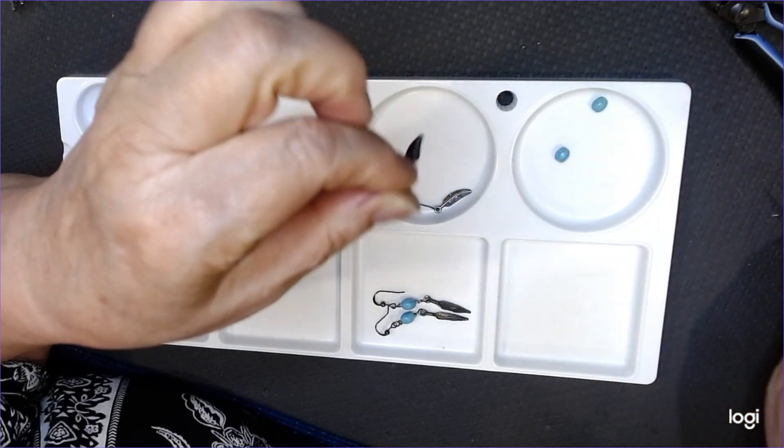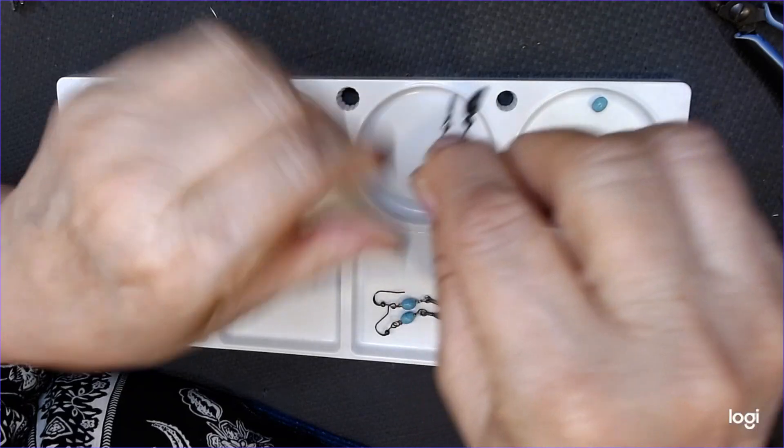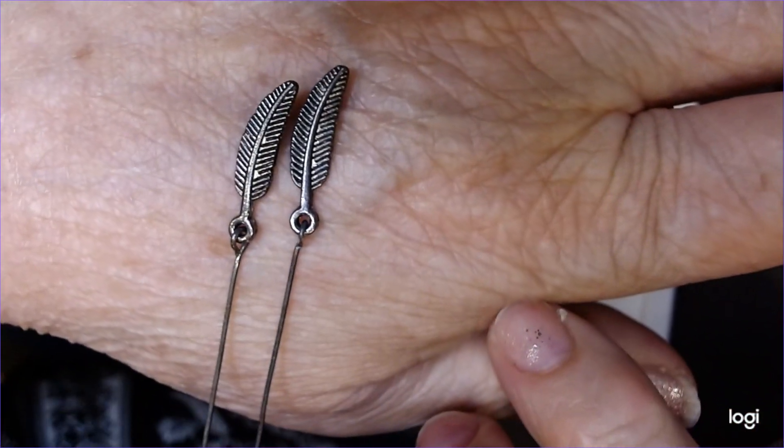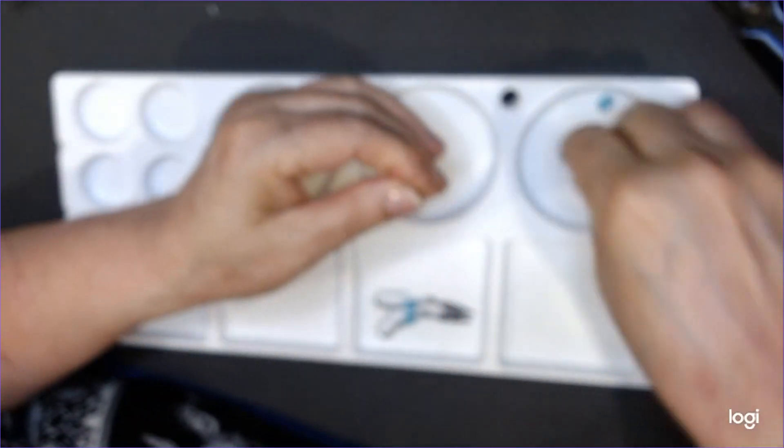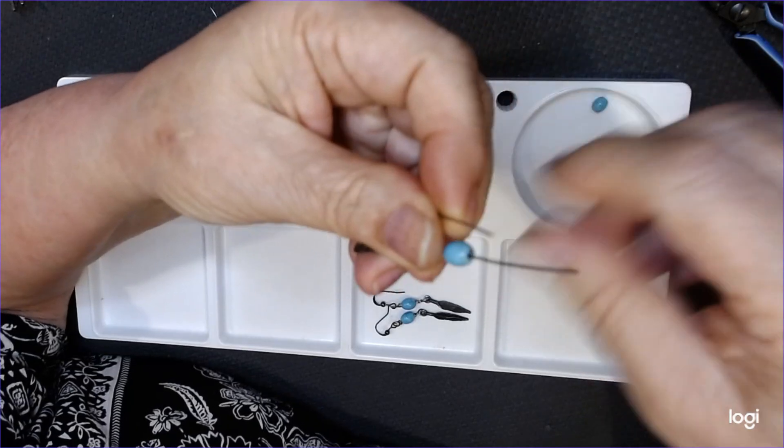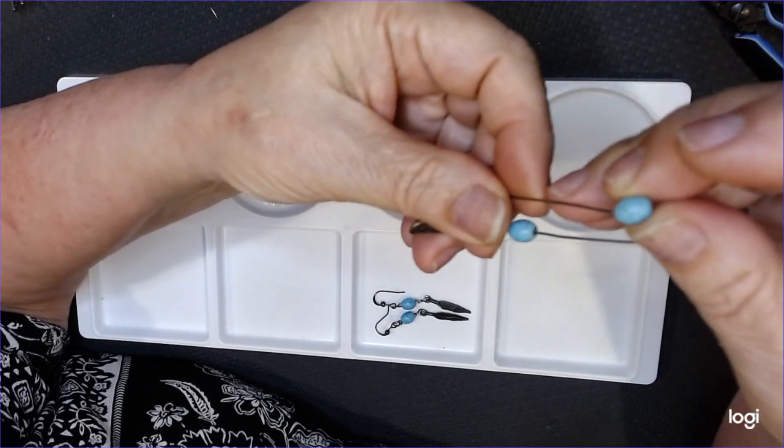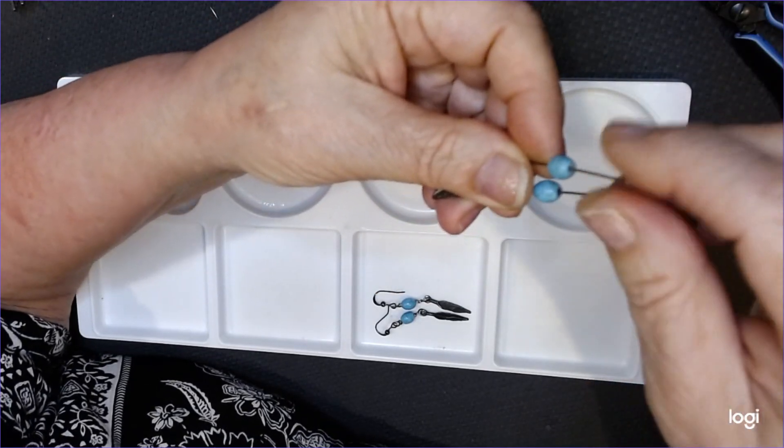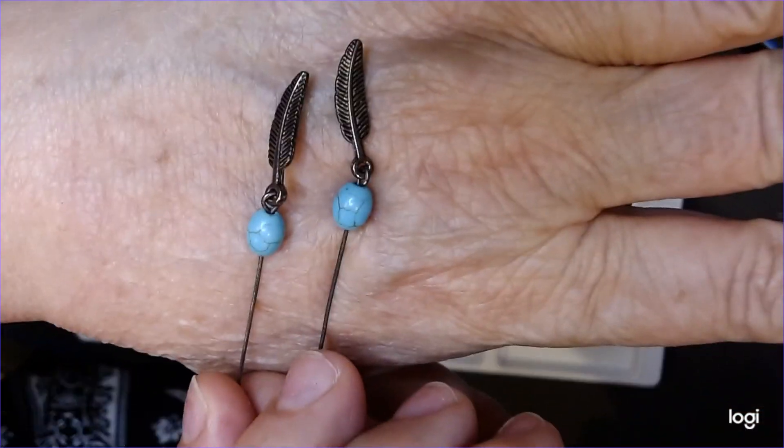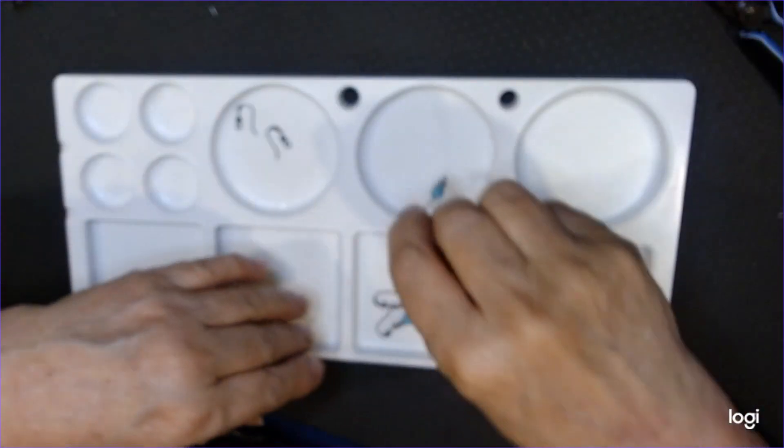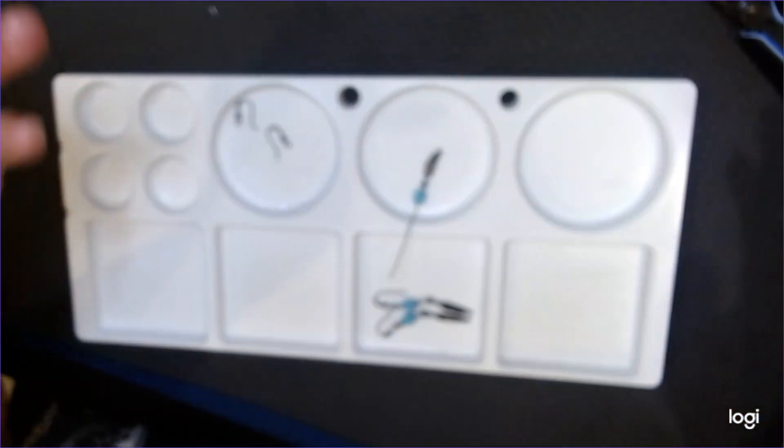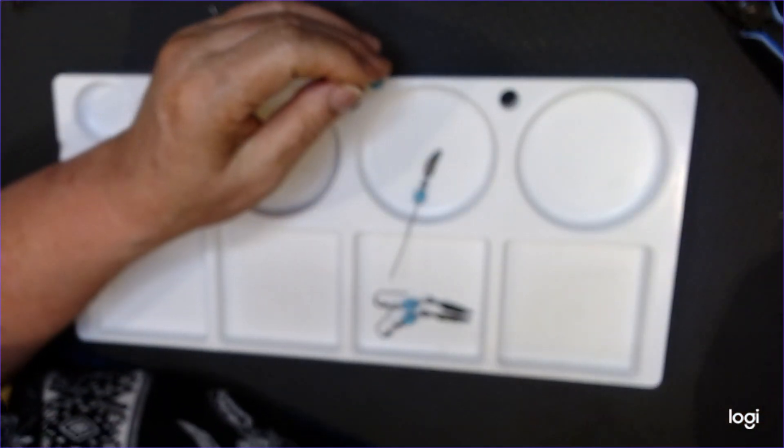Now we're going to put on our turquoise. One here, and one here. And there's our turquoise on with our feathers. Aren't those cute together? Now all we've got to do is put our circle and put on our wires. And we're done. That's how simple this pair is.